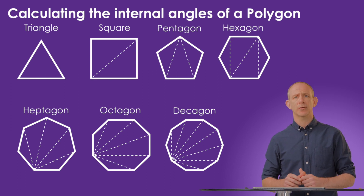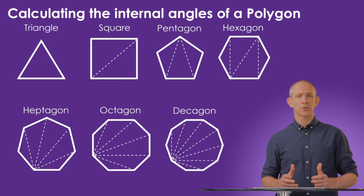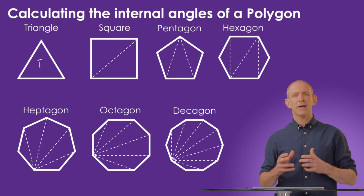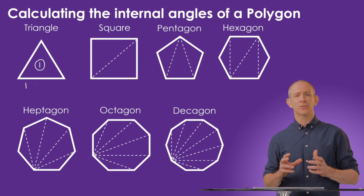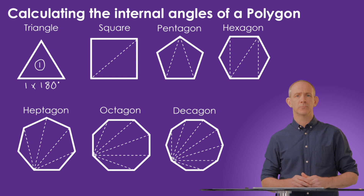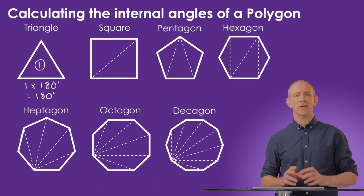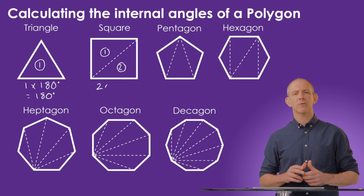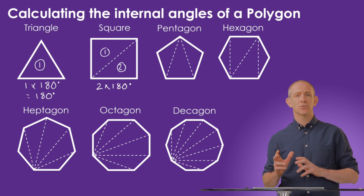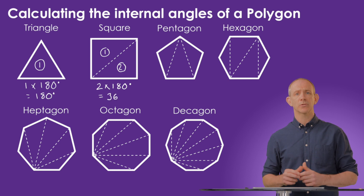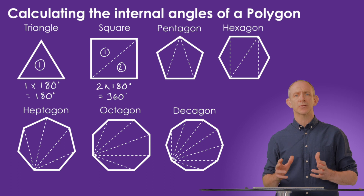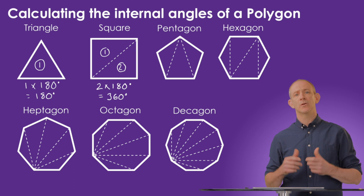The way to calculate the internal angles of a polygon is to think about the minimum number of triangles that can be used to create it. The minimum number of triangles used to create a triangle would be 1. As each triangle has internal angles that add up to 180 degrees, that is the internal angles of a triangle. We can now use that logic to calculate all other polygons' internal angles. The minimum number of triangles for a quadrilateral is 2, so we can calculate the internal angles as 2 × 180 = 360 degrees.